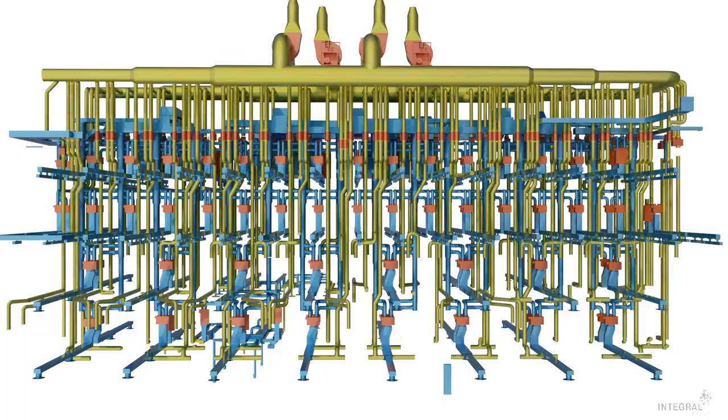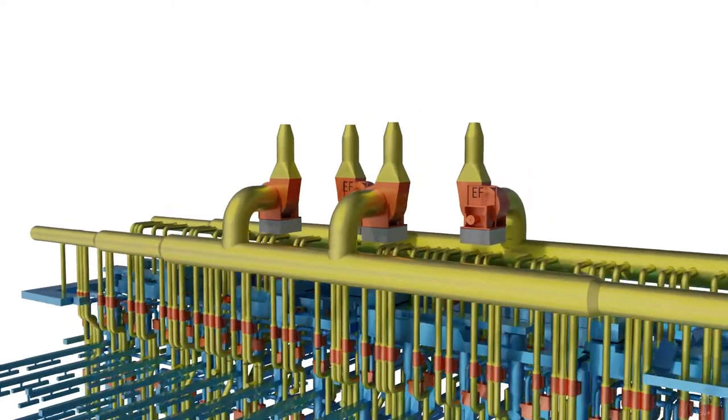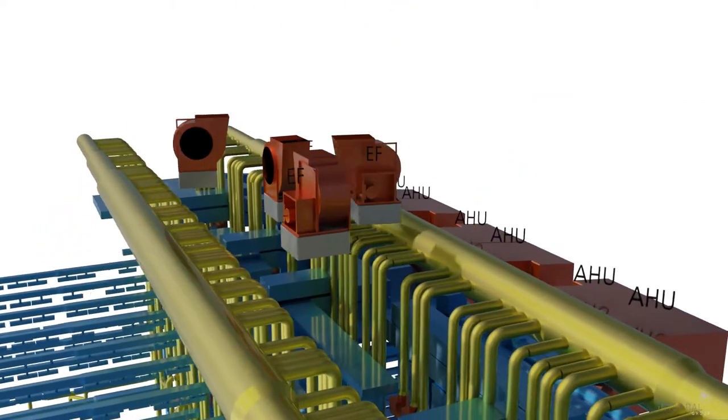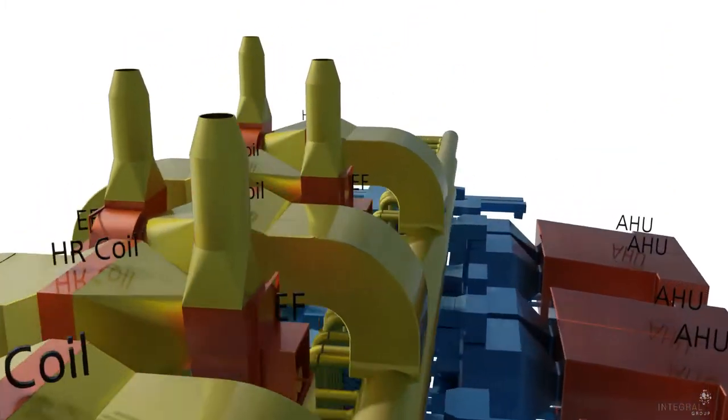Every exhaust valve was ducted up to exhaust headers on the roof. For phase one of the renovation, we reused the existing exhaust fans, fit them with variable frequency drives, add another fan for redundancy, and then add heat recovery coils.